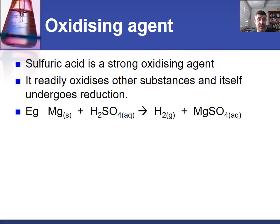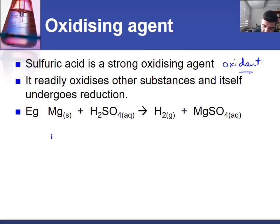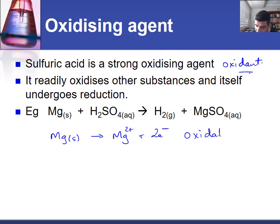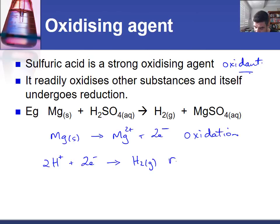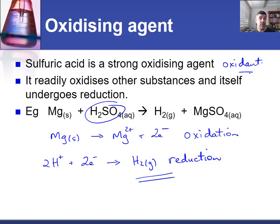The other important reaction is when sulfuric acid acts as an oxidizing agent. The simplest example is when it reacts with different metals. Looking at the ionic form, magnesium becomes Mg2+ plus 2e−, which is a loss of electrons — oxidation is loss — so this is the oxidation half reaction. The 2H+ ions gain electrons to form H2 gas, which is the reduction step. During this reaction, the sulfuric acid oxidizes the magnesium and is itself reduced. These two reactions — dehydrating agent and oxidizing agent — are important to recall when asked about the chemical behavior of sulfuric acid.